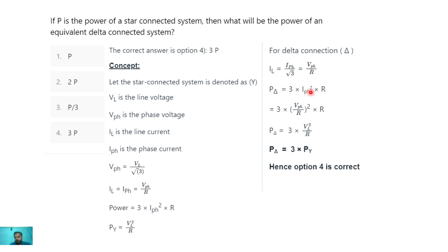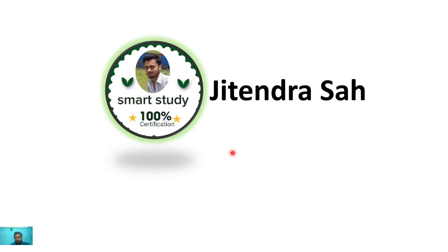For delta connection, P_delta = 3·Ips²·R = 3·(Vps/R)²·R = 3·Vl²/R. Since Vl²/R equals Py, we get P_delta = 3·Py. So option 4 is correct — the power of the delta-connected system is 3 times the power of the star-connected system. That was all for today. Hope you enjoyed the lecture. Thanks for watching and please don't forget to subscribe to my channel.